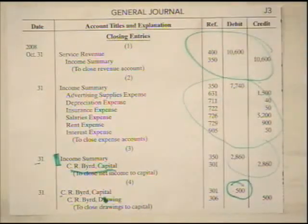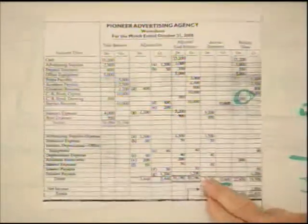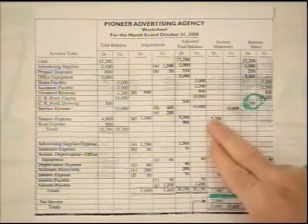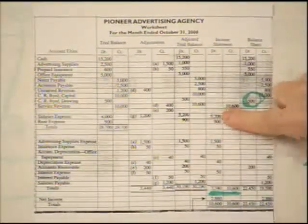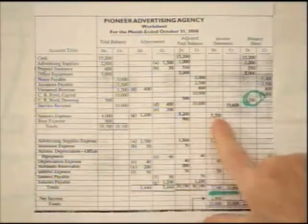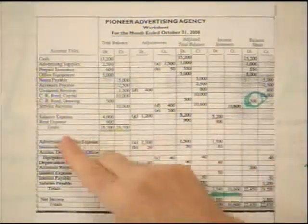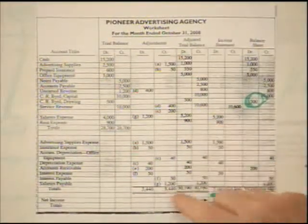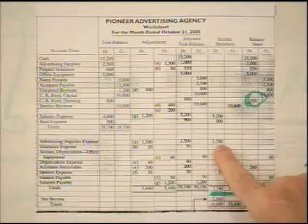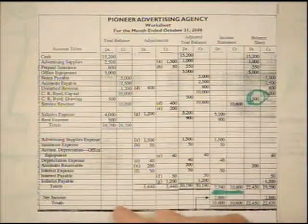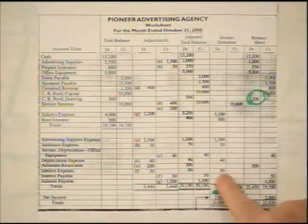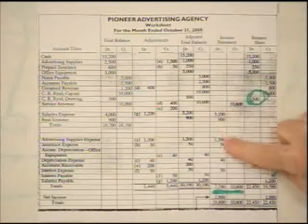The second entry — again I'd put my finger on the Income Statement, but this time I'd look at the debit column. As you can see, I have quite a number of accounts that have debits. What do I need to do to make all of these account balances zero? I'd have to credit them. So I'd go one by one: salaries expense, credit $5,200; rent expense, credit $900; advertising supplies expense, credit $1,500; insurance expense, credit $50; depreciation expense, credit $40; interest expense, credit $50. I'd list each one down.